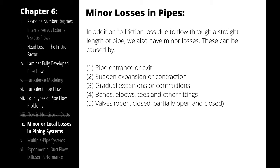The other type is minor losses, which are associated with anything else. These are usually points of transition: the pipe changing area or changing direction, going through elbows, bends, or other fittings, especially valves.